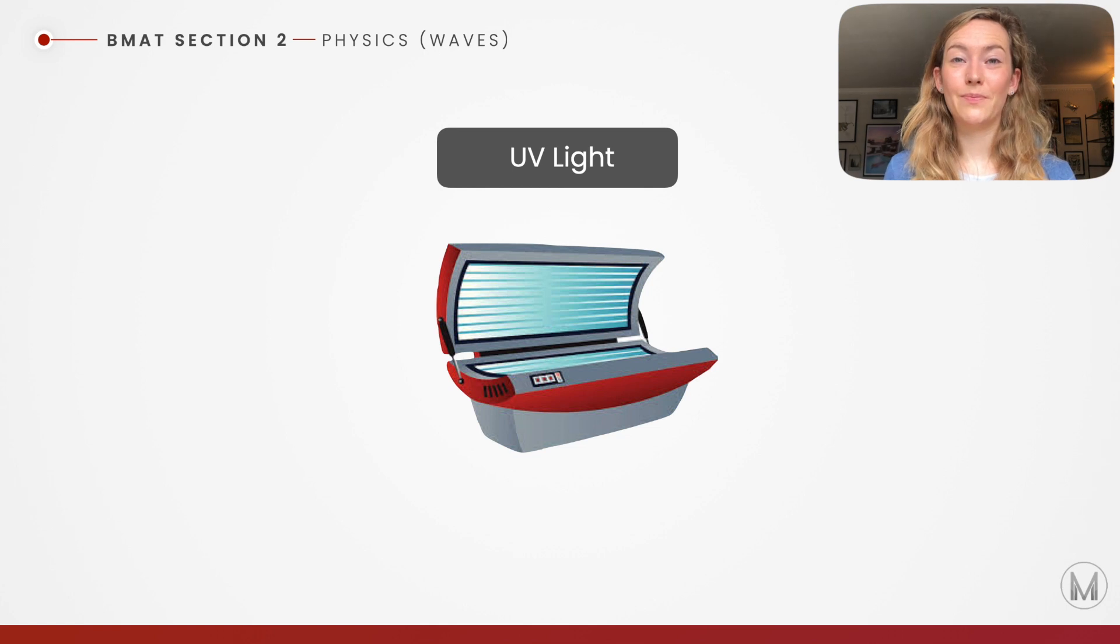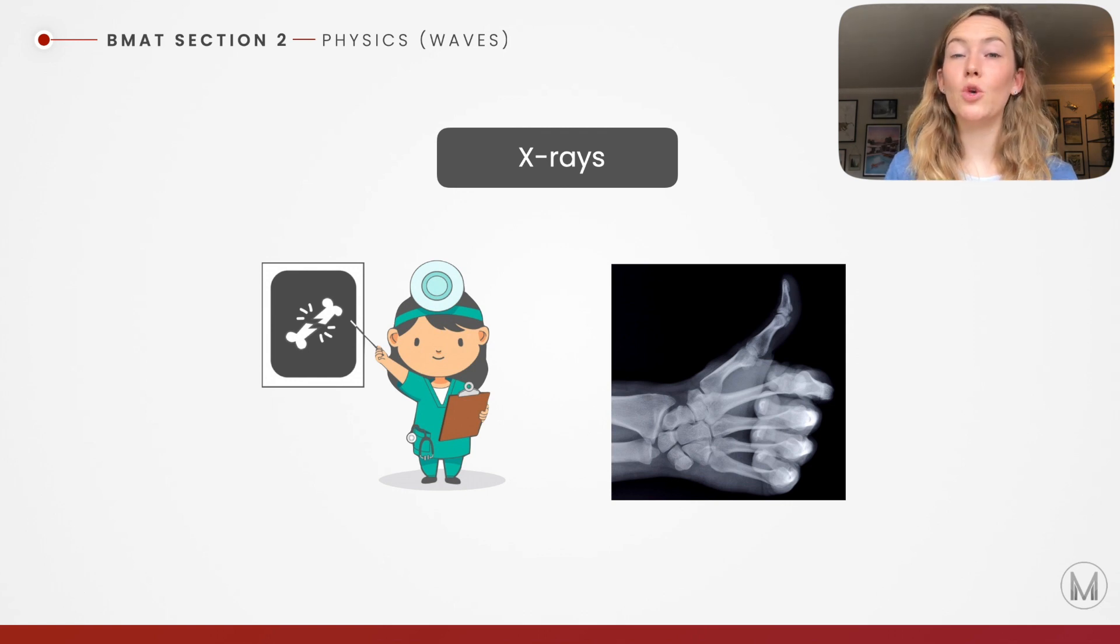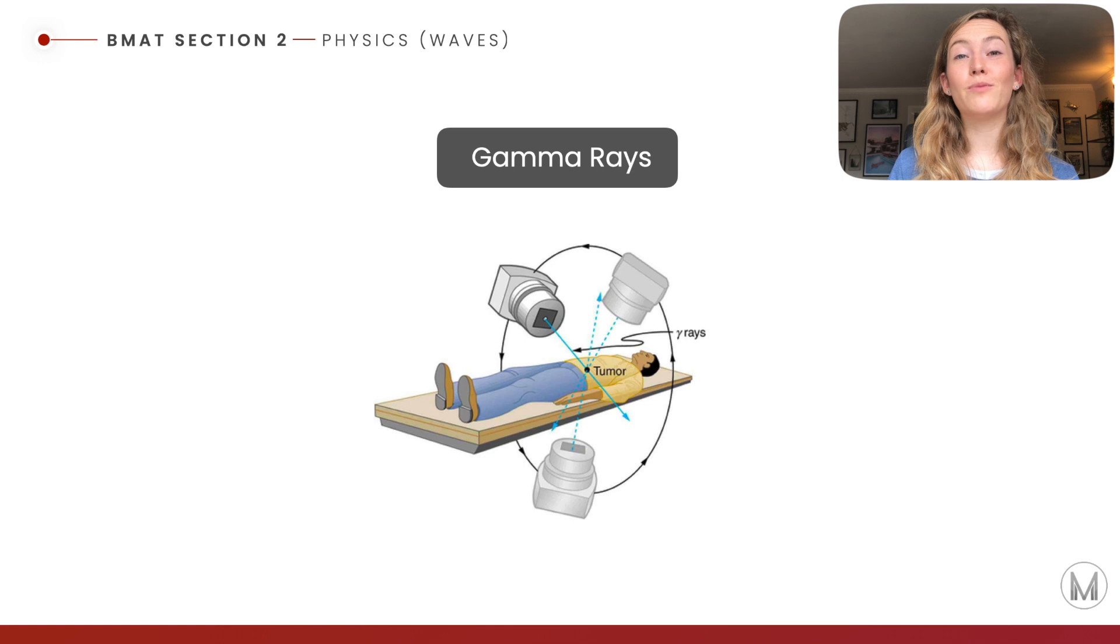Then we have UV light. This might be used in tanning beds, for example. We'll talk a bit later about why that might not be the best idea. They might also be used for UV lamps. I'm sure you've heard of x-rays before. These can be used in medical settings. Because of their high frequency, they can travel through tissue, but they can't travel through bone. That is how we get our images, where we can check for broken bones. They can also be used in airport security. Then we come to gamma rays. These are the shortest wavelength in our electromagnetic spectrum. They're really powerful. They can be used to treat cancers. They can be targeted at tumour cells, for example. They can also be used as gamma cameras to diagnose cancers.